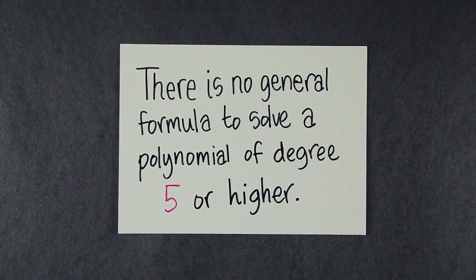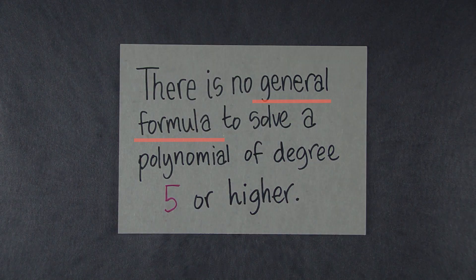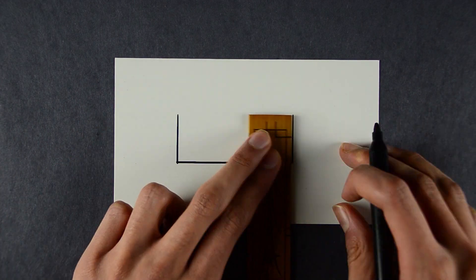Our first step is to define precisely what we mean when we say a polynomial has no general solution. That definition is made using fields. A field, roughly speaking, is any set where you can add, subtract, multiply, and divide elements. The rational numbers, for example, form a field.